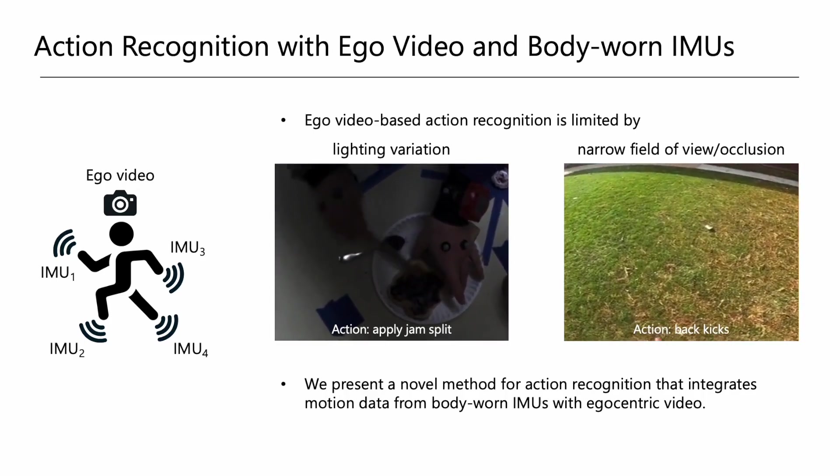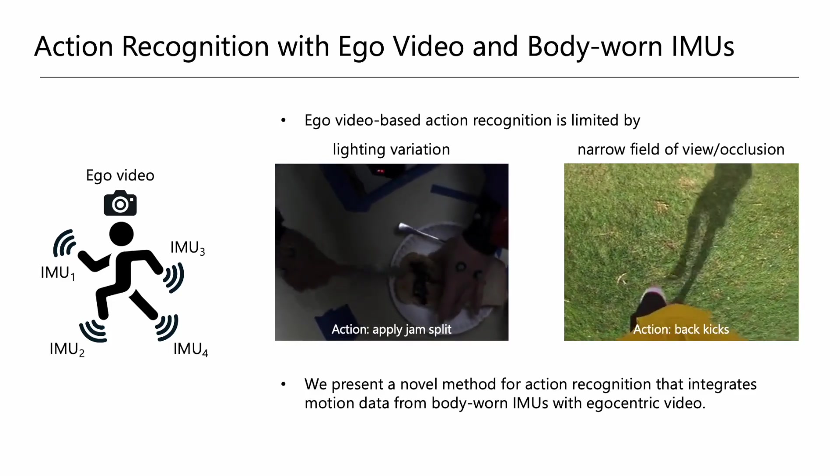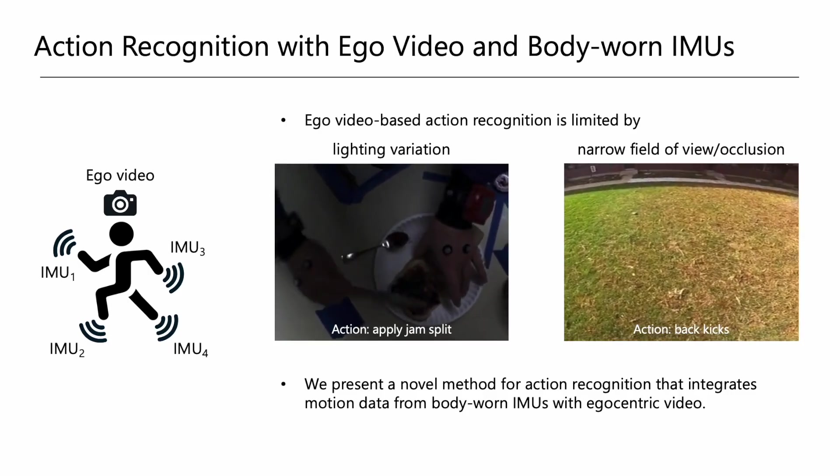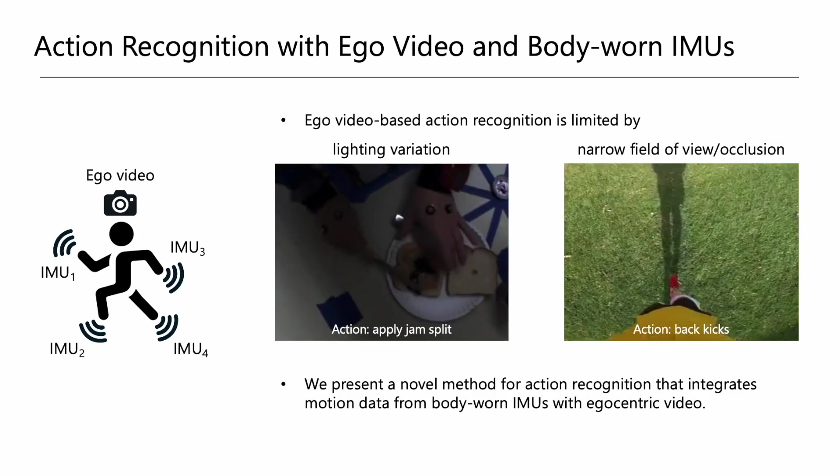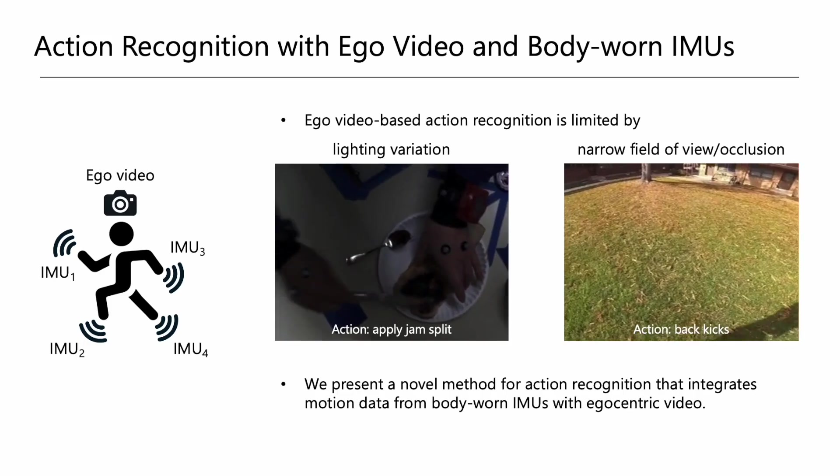To address these issues, we utilize the Inertial Measurement Units, or IMUs, which are small motion sensors placed on different parts of the human body. Unlike purely visual signals, IMU signals are not affected by lighting conditions or occlusions, making them highly robust in dynamic real-world settings.